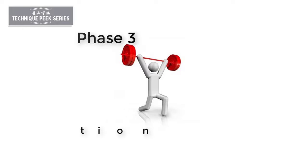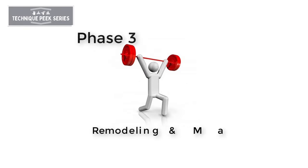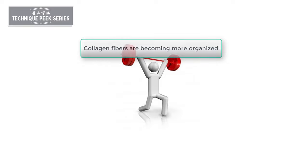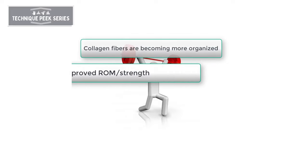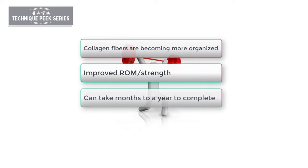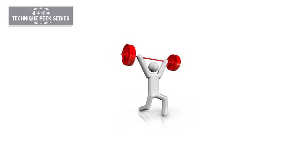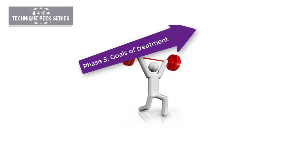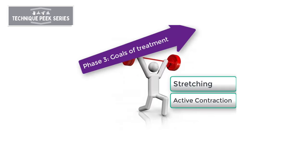Phase 3 of the inflammatory process is called remodeling and maturation. During this phase, those collagen fibers are becoming more organized. Notably improved range of motion and strength is present. This phase can take months to up to a year to complete. The goals of treatment during this phase are stretching, active contraction, and resistive loads.